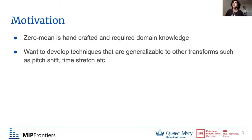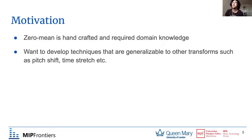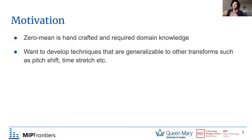That brings us to our motivation. Solutions like zero mean convolutions are handcrafted and require domain knowledge, which is great, but we might not always have this information available, and it's hard to come up with these solutions. So we wanted a deep learning approach with a more generalizable solution, with the intent of applying it to other transforms such as pitch shifting, time stretching, and so on — using zero mean convolutions as a test to prove that our system works.